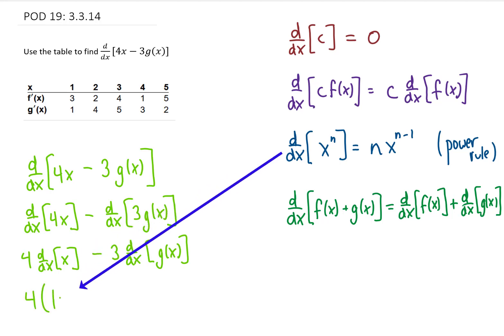Ultimately what that gives us is 1 times x to the 0 power. x to the 0 power is just 1, so a short derivative made long. The derivative of x with respect to x is just 1.